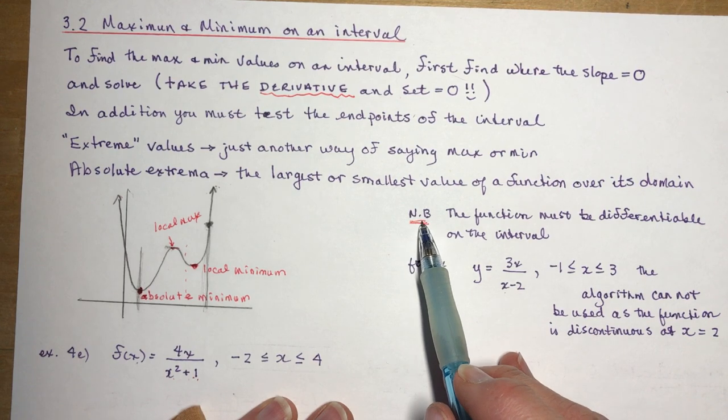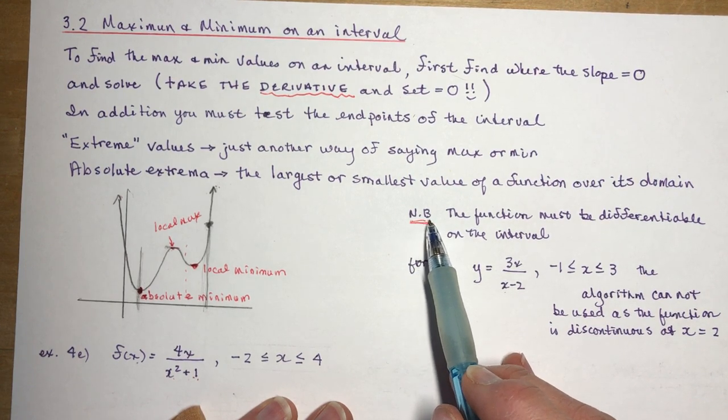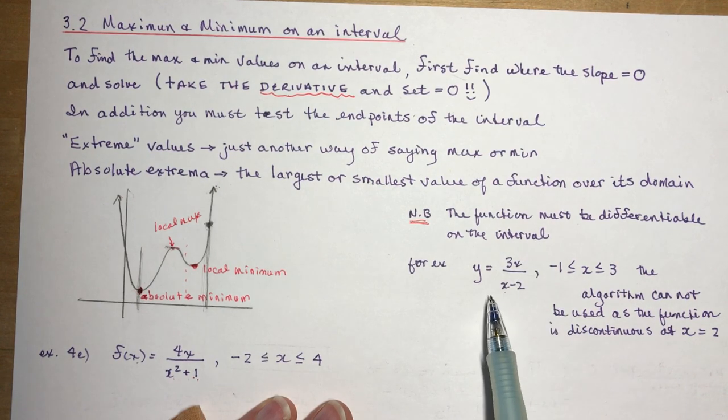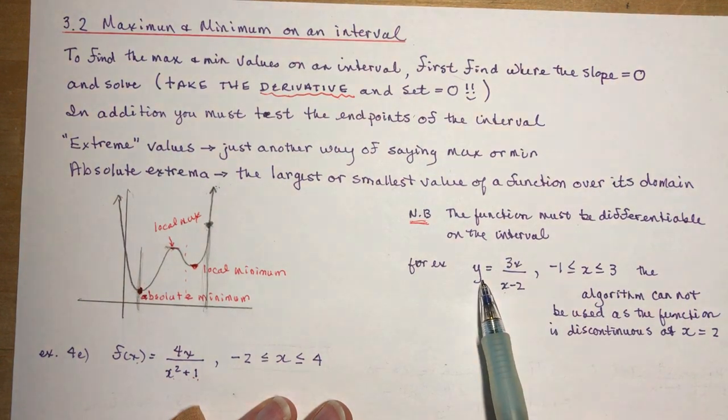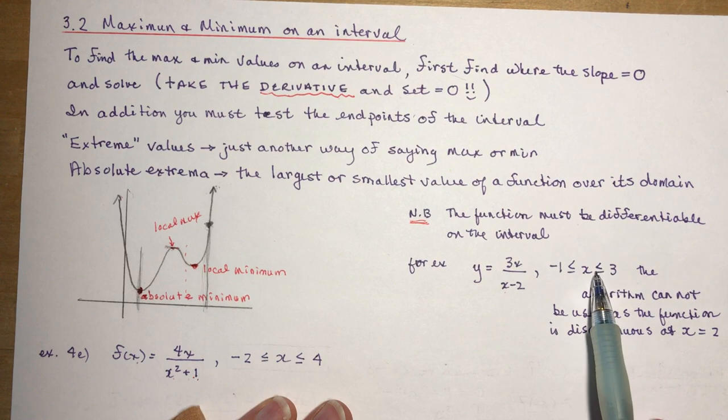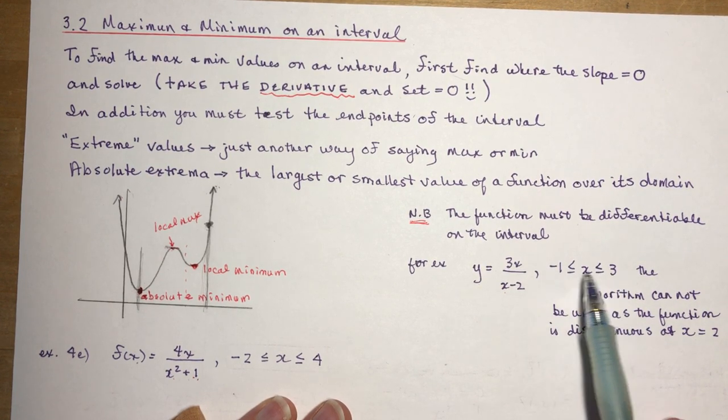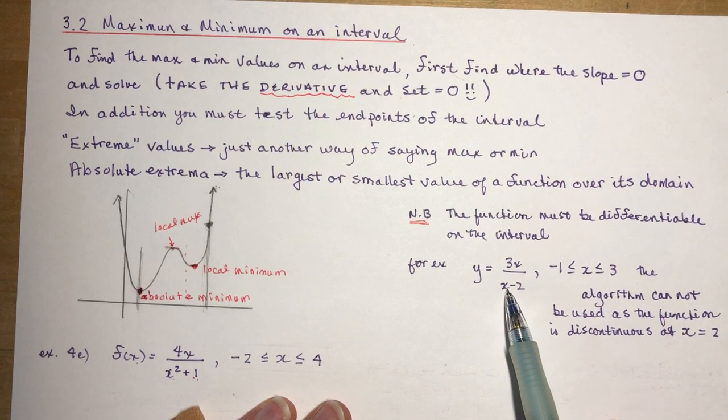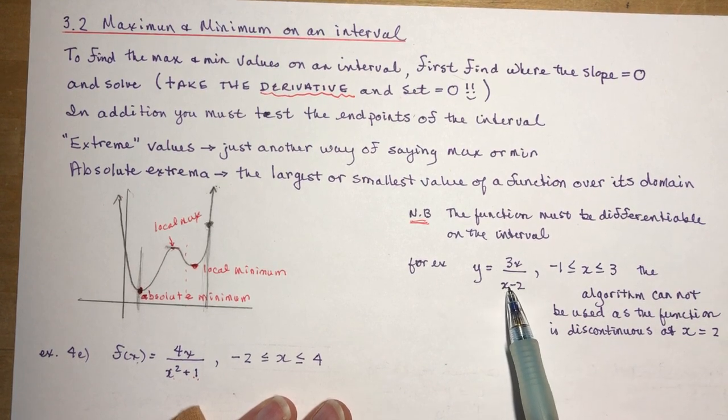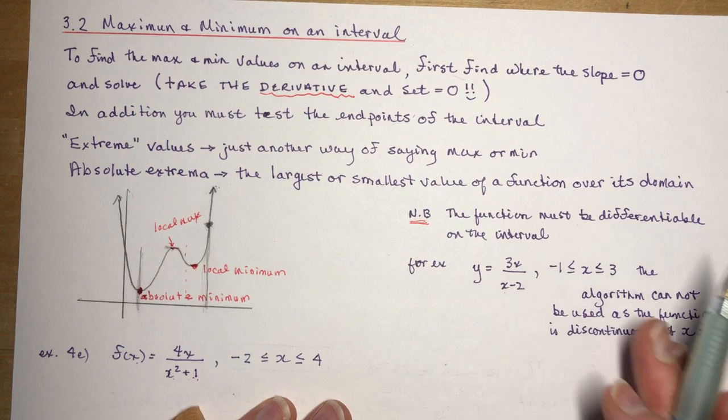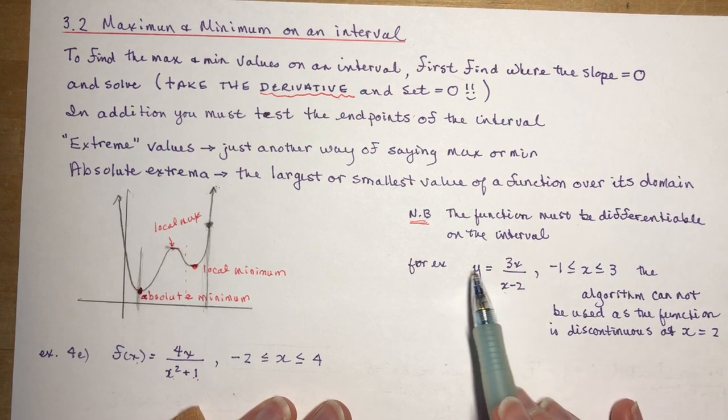Another little thing you have to watch out for. Note well here, the function must be differentiable on the interval. So if I gave you this function and said, find the maximum minimum values over this interval, you'd say, oh, but when x is 2, I can't take the derivative at that point because the function is discontinuous there. So we can't apply the algorithm to this function.